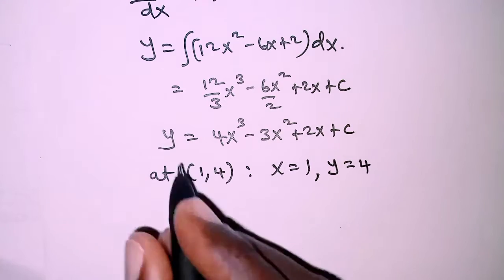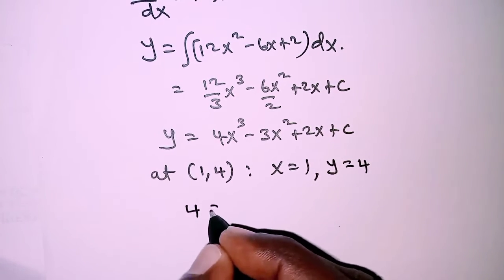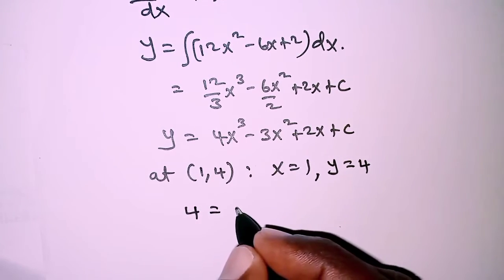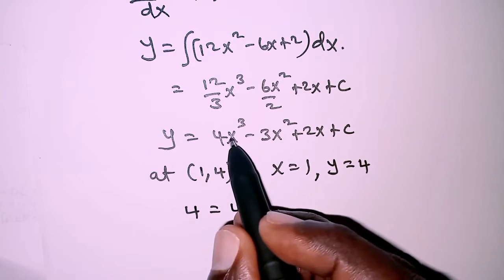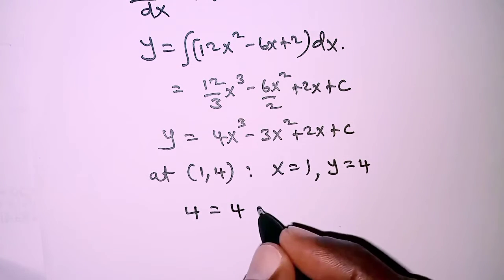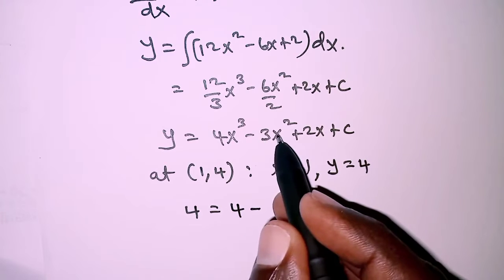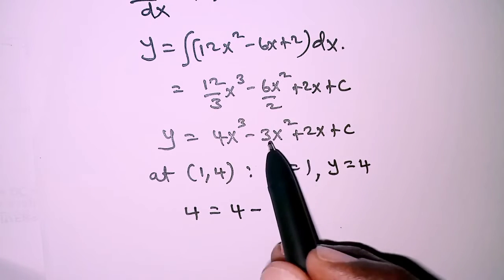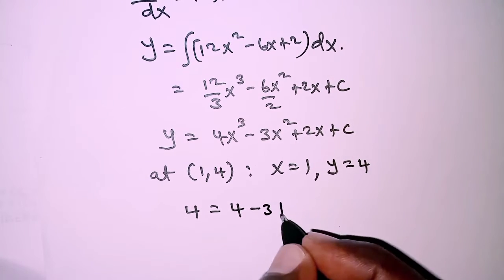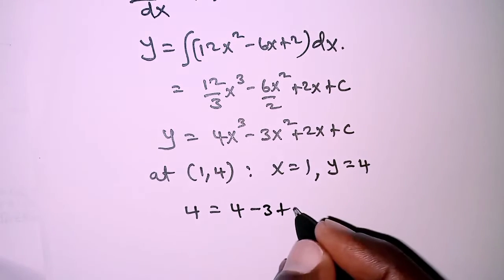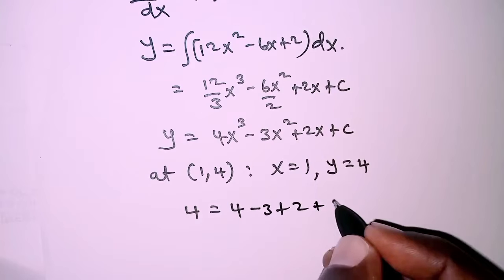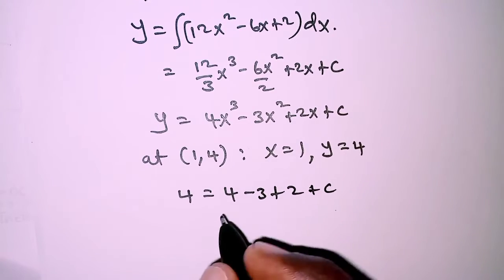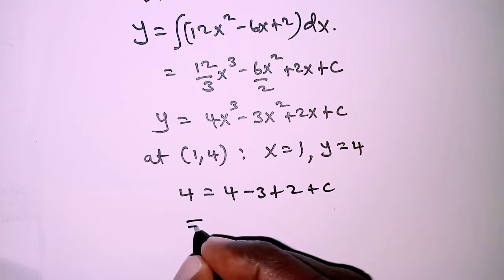Substituting the values of x and y in the equation, we have y is 4, and then the right-hand side will have 4 times 1³, which is 4, minus 3 times 1², which is 3, plus 2 times 1, which is 2, plus C.